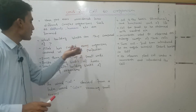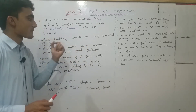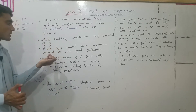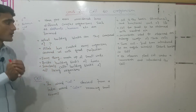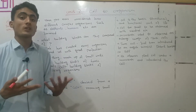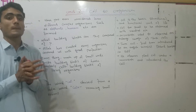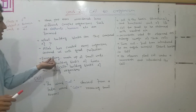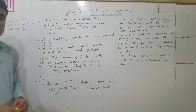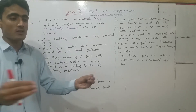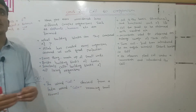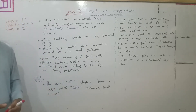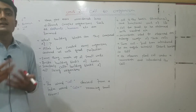Allah has created every organism around us with great perfection. Everything is made of small units. Each thing is composed of individual small units that come together to form a whole system.